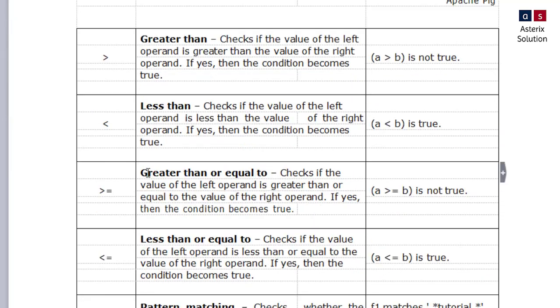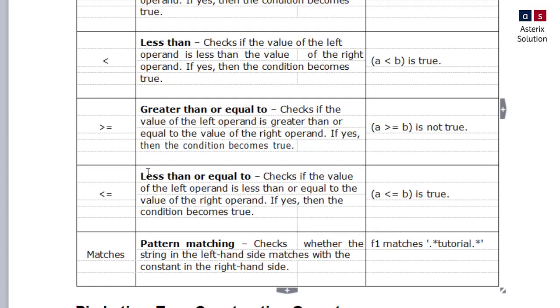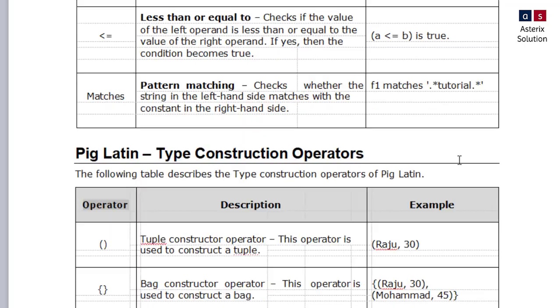Greater than equal: one is not greater than equal to one, but one is not greater than one, but one is greater than equal to one. Same goes for less than equals. These are the basic operators we use in Pig Latin.